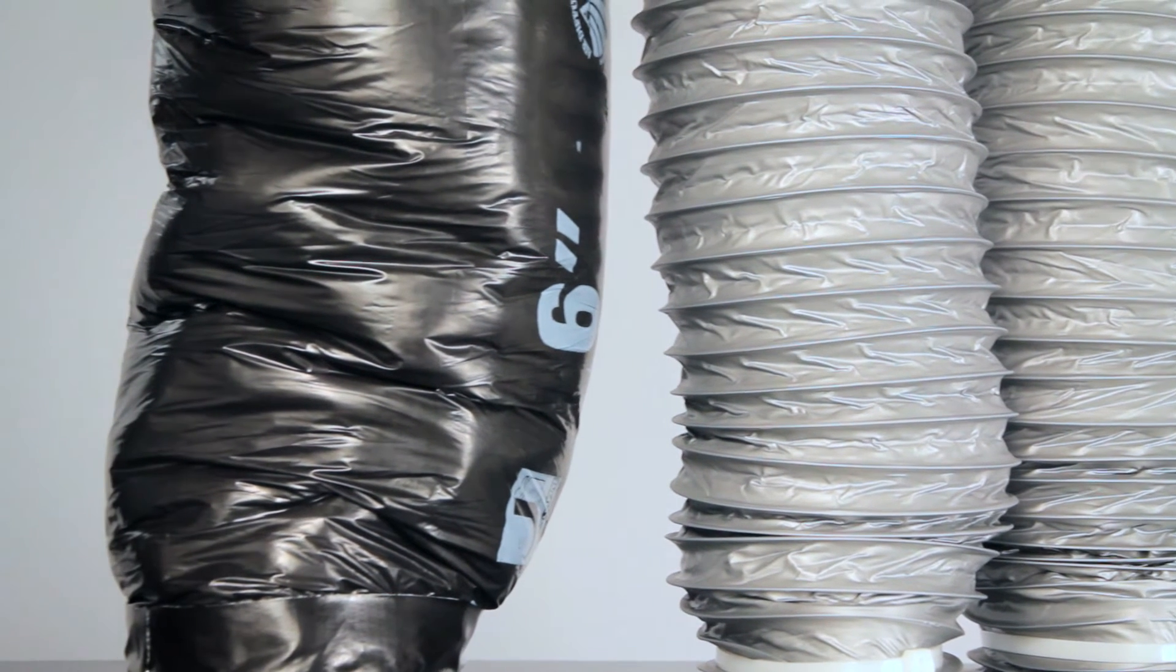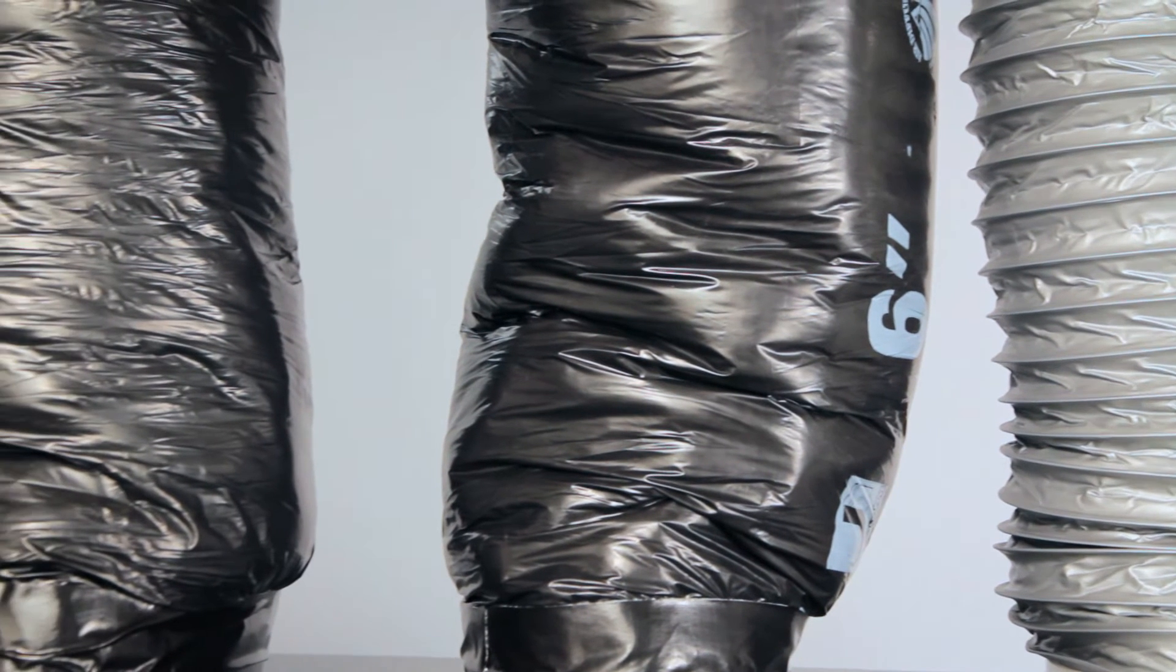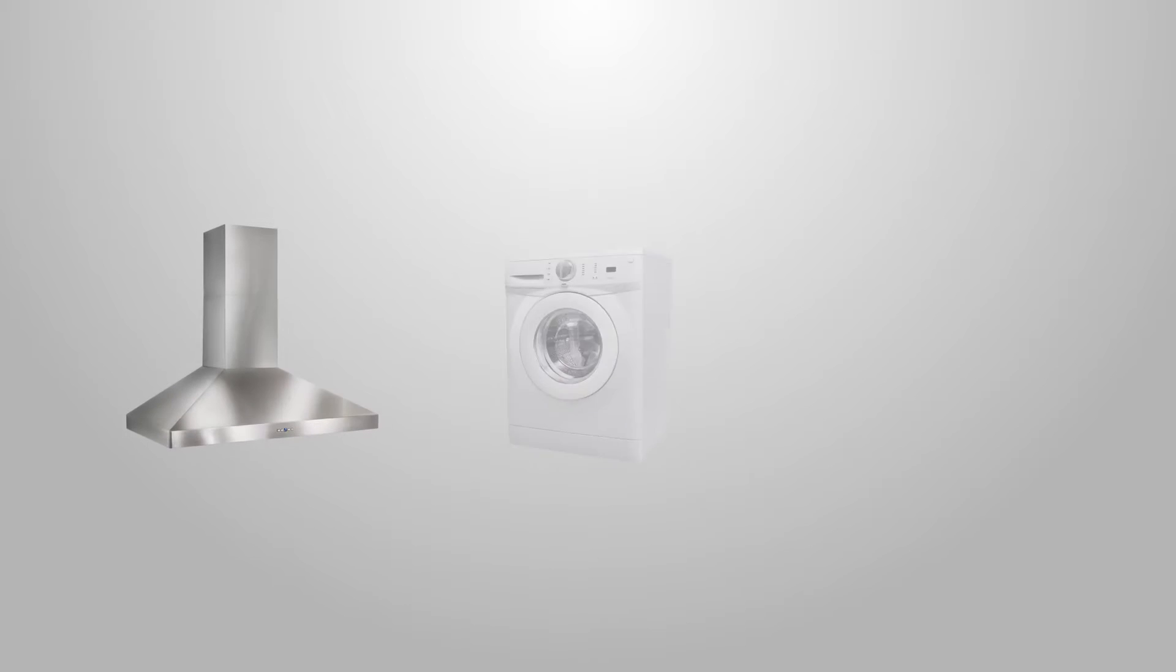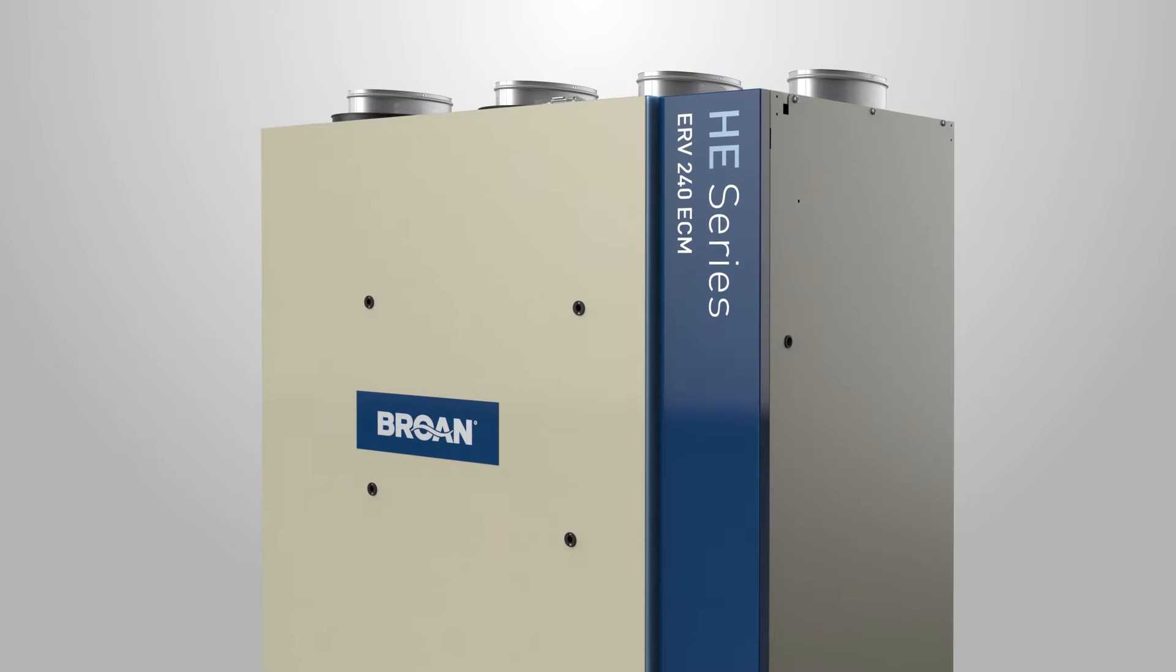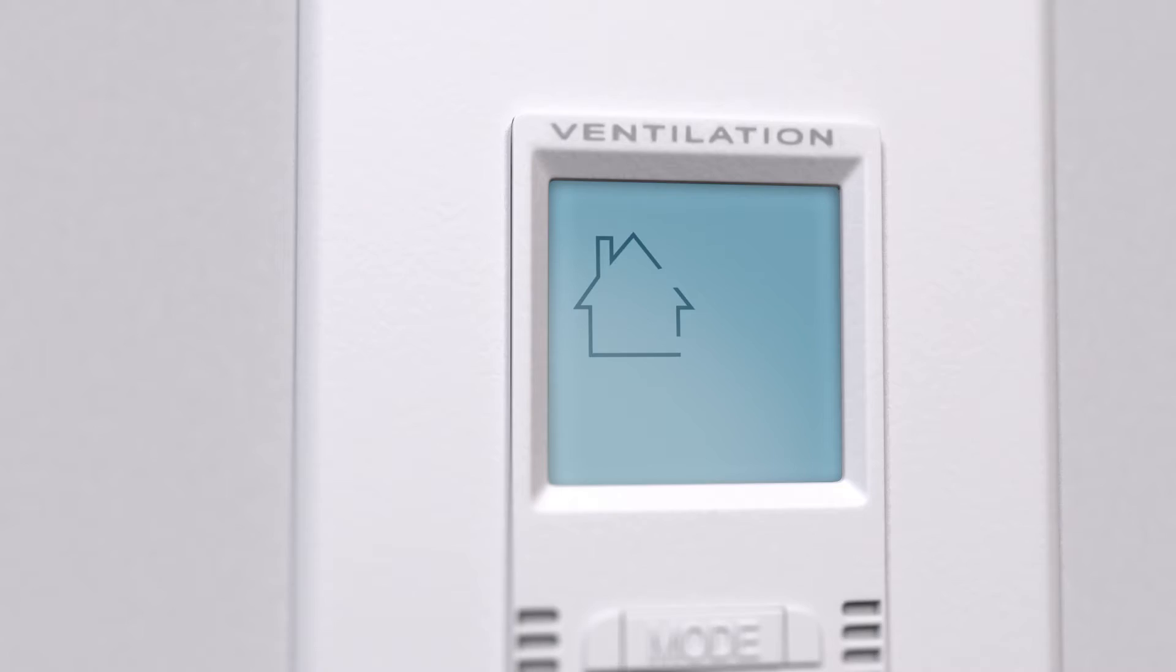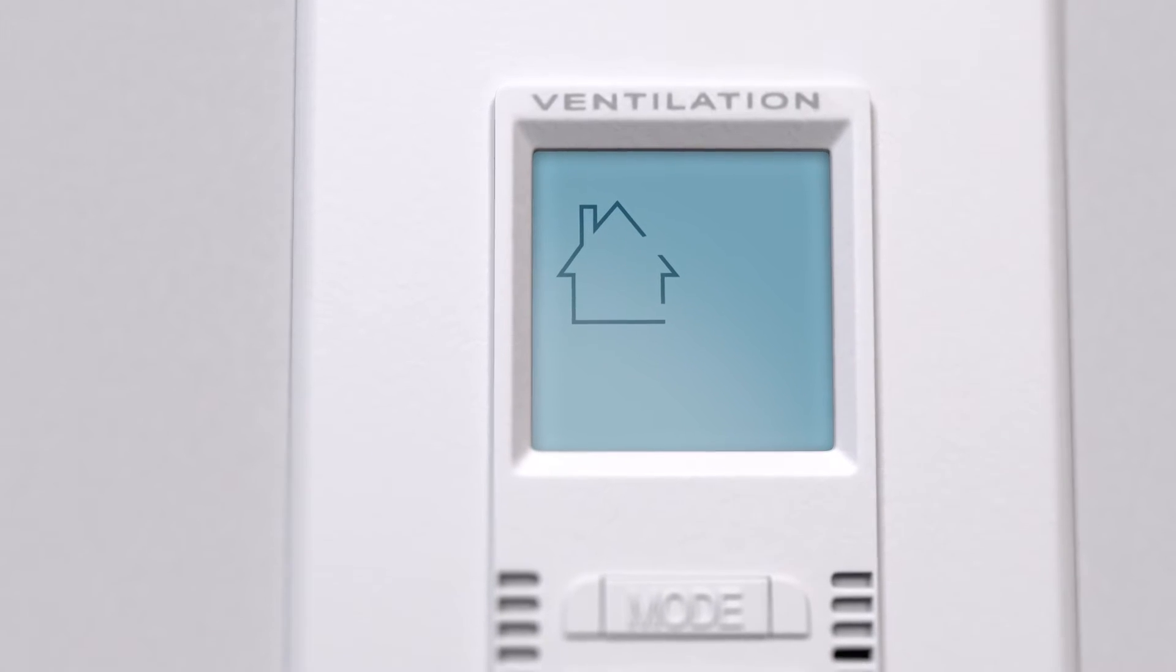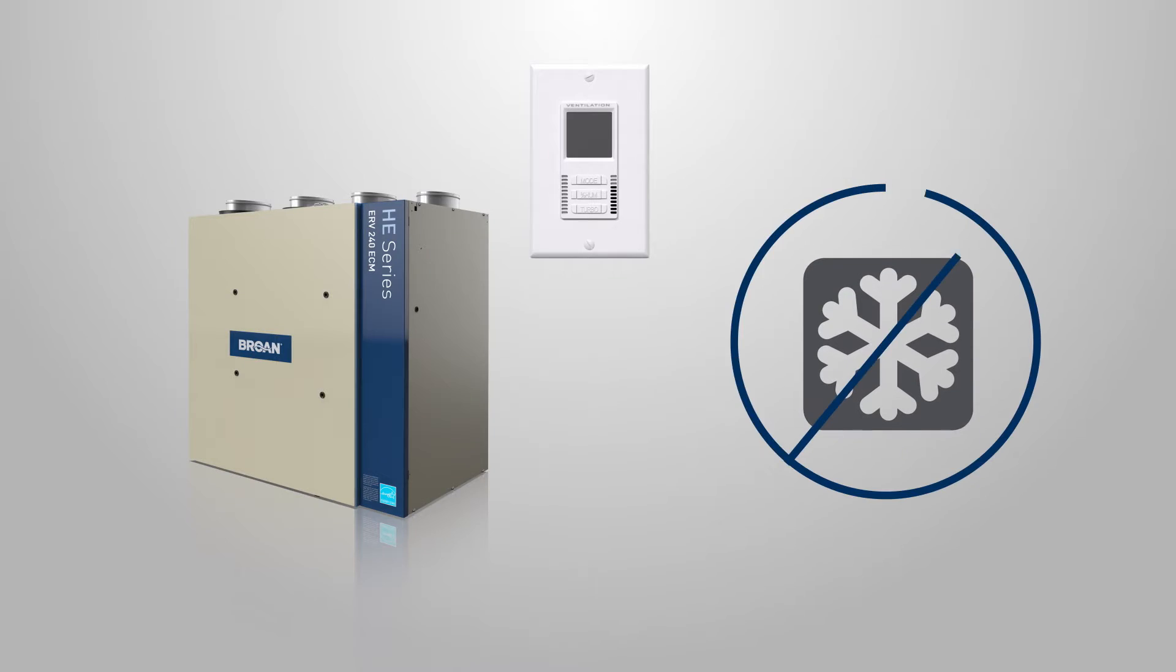Seal all the unit ductwork with tape and close all windows and doors. Turn off all exhaust devices such as range hood, dryer, and bathroom fans. The special design of these units, combined with the new wall control, now offers a great feature. No automatic defrost cycle will perform during the balancing steps.